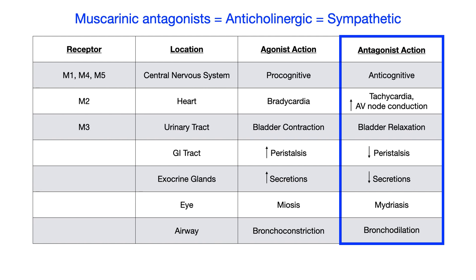Whether you're agonizing or blocking muscarinic receptors, the clinical constellation of findings can be described as either anti-sympathetic or sympathetic. Building that framework in your brain makes it a lot easier to understand these receptors and the effects that all of these different drugs have.